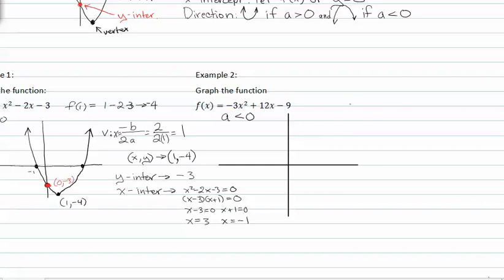I need to find my vertex where x is equal to -b over 2a. This is negative b or -12 over 2 times -3. This gives me -12 over -6 or 2.